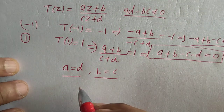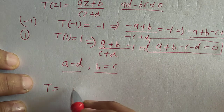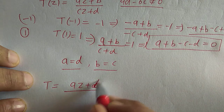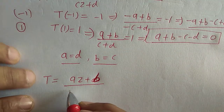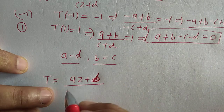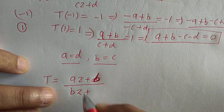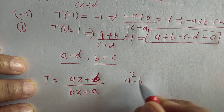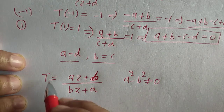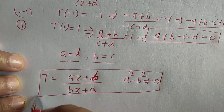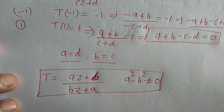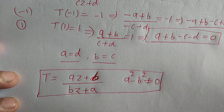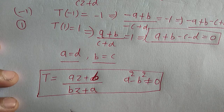Substituting A = D and B = C, the bilinear transformation becomes T(z) = (Az + B)/(Bz + A), provided A² − B² ≠ 0. This is the bilinear transformation having fixed points −1 and 1.